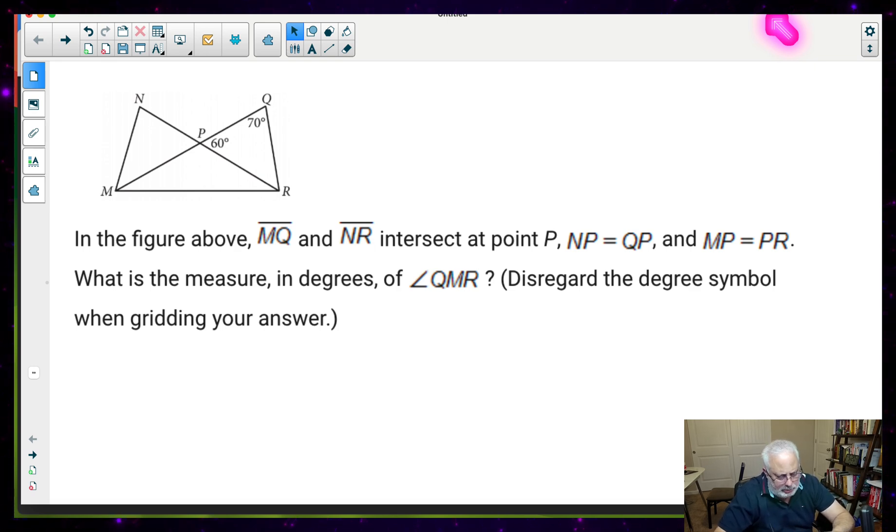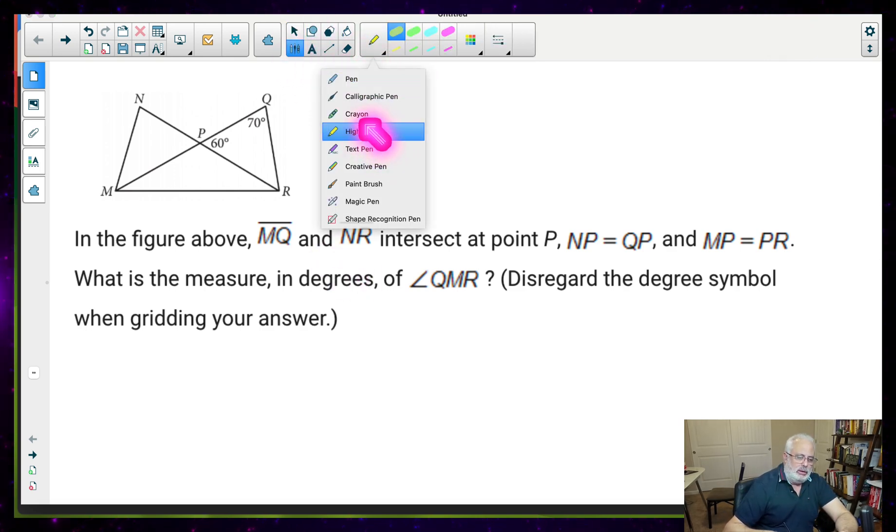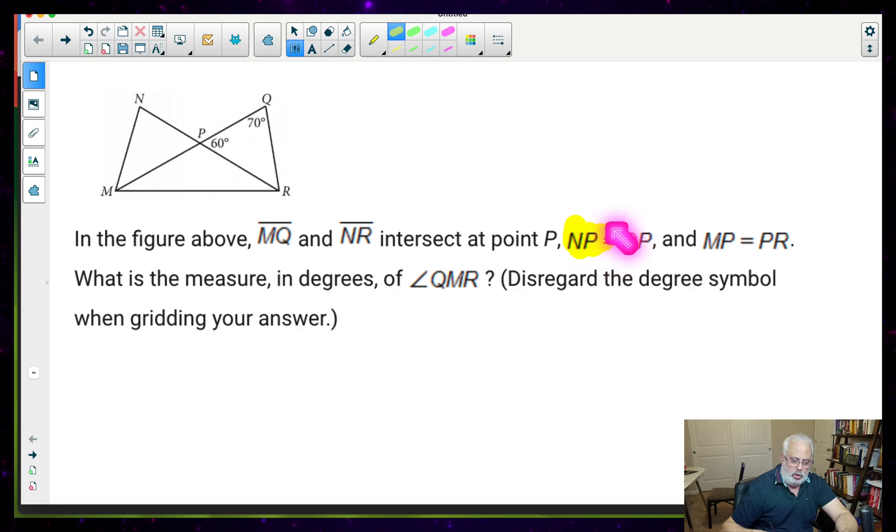In the figure above, MQ and NR intersect at point P. That's a description of the picture. So I'm going to use my highlight right here, and I'm going to go over MP equals QP. So MP right here is equal to QP. And MP is equal to PR.